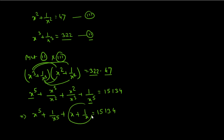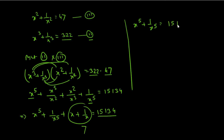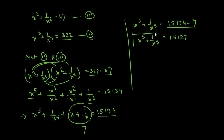The value of x + 1/x is 7 from equation 1, so we subtract 7 from both sides: x⁵ + 1/x⁵ = 15,134 − 7 = 15,127. Therefore, the value of x raised to the power 5 plus 1 over x raised to the power 5 equals 15,127. This is our final answer.